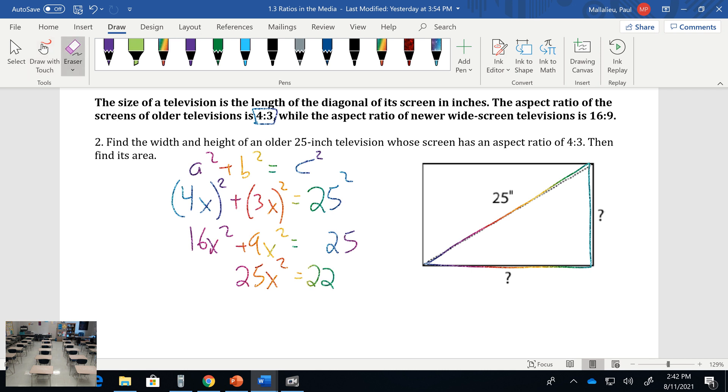Divide by 25 on both sides, x² equals 25. Take your square root, and x equals 5.